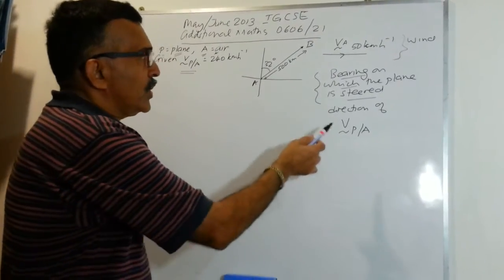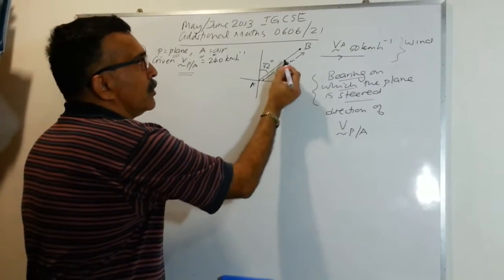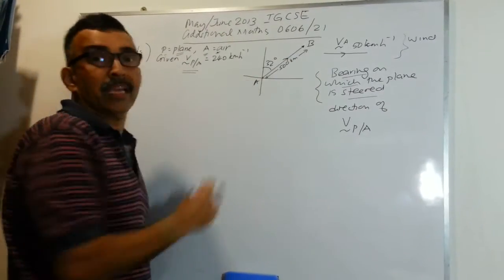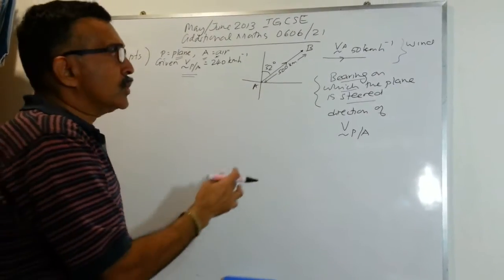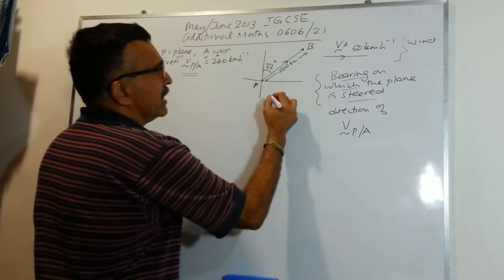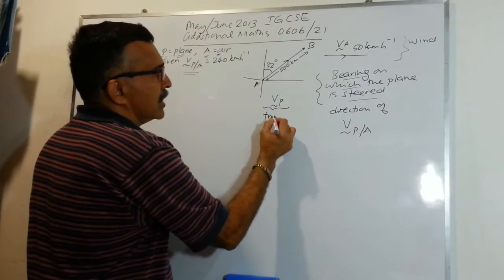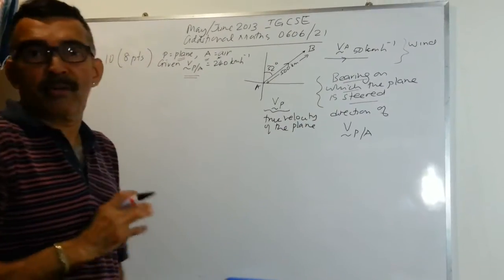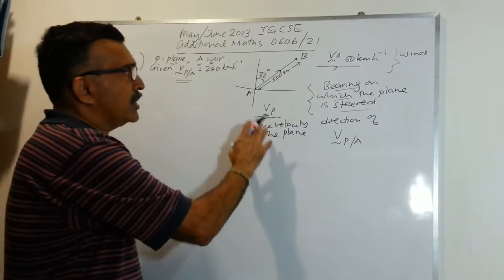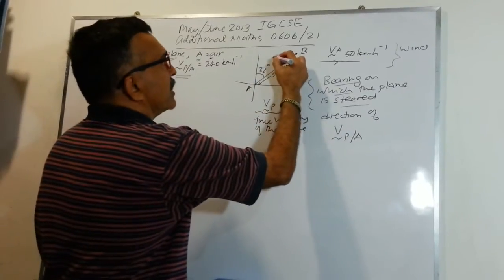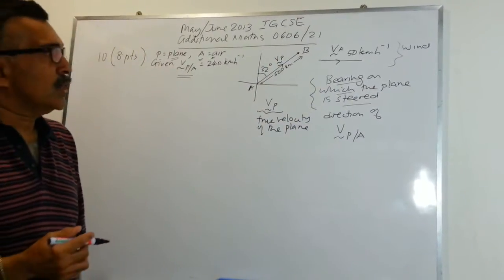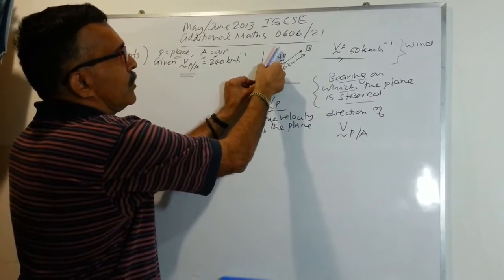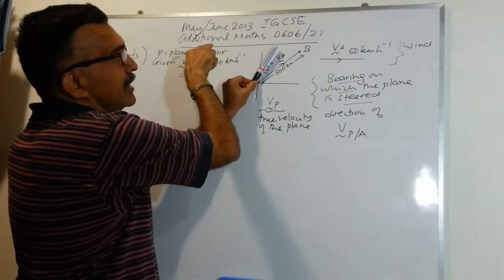Remember, we want to go from A to B, which means the true velocity of the plane must be along AB. We have to set the plane in such a direction so that, with the wind, the resultant velocity will be along AB.